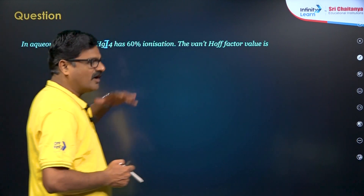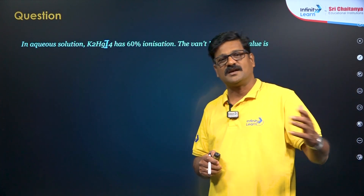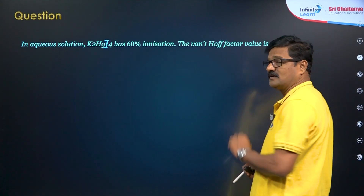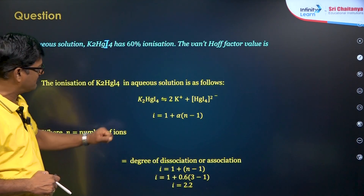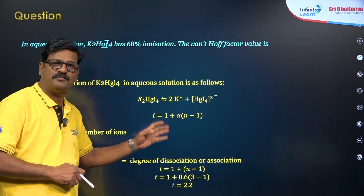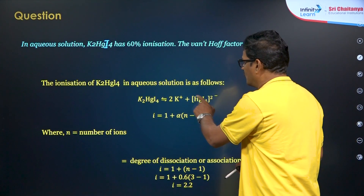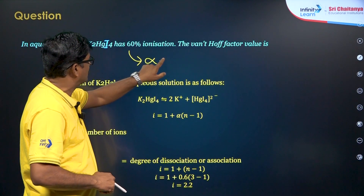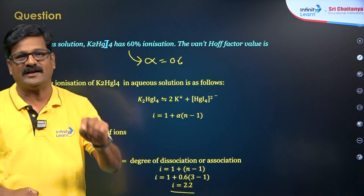Here is an example of how a question can appear: In an aqueous solution of K₂HgI₄ (Nessler's reagent) with 60% ionization, calculate the Van't Hoff factor. K₂HgI₄ ionizes to give 2K⁺ and HgI₄²⁻. Using i = 1 + α(N − 1): here N = 3 (one formula unit gives 3 ions), and α = 0.6 (60% ionization). Applying the formula, i = 1 + 0.6 × (3 − 1) = 1 + 1.2 = 2.2.